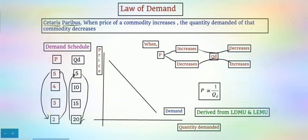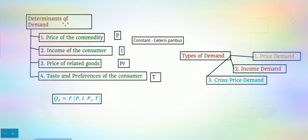Now let's see the determinants of demand. The first and foremost is the price of the commodity, shortly known as P. Price is the major factor that influences consumer demand. If price increases, consumers tend to buy less of that commodity. This applies not only to agricultural goods but to almost all goods. If the price of sorghum or maize increases, the quantity demanded of them will decrease.